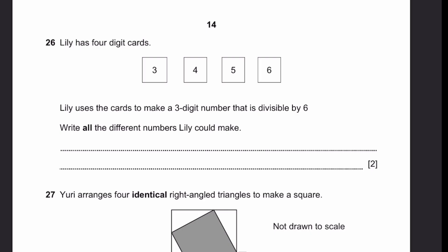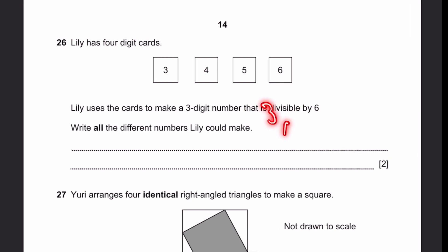Question 26. Lily has 4 digit cards: 3, 4, 5, 6. Lily uses all the cards to make a 3-digit number that's divisible by 6. Write all the different numbers Lily could make. Alright, so if the number is divisible by 6, that means it has to be divisible by 3 and 2. So if it's divisible by 2, the last digit has to be even, one of these.